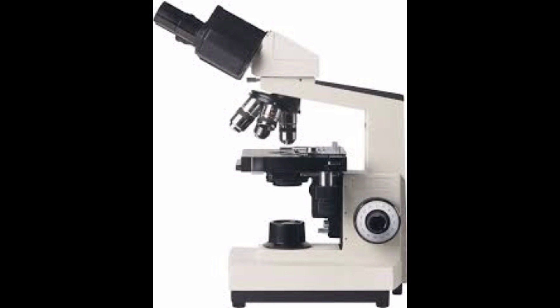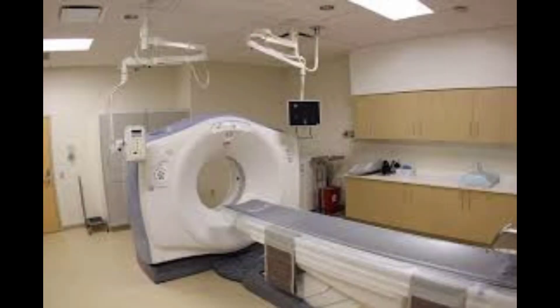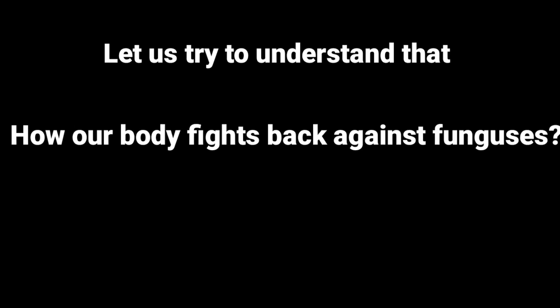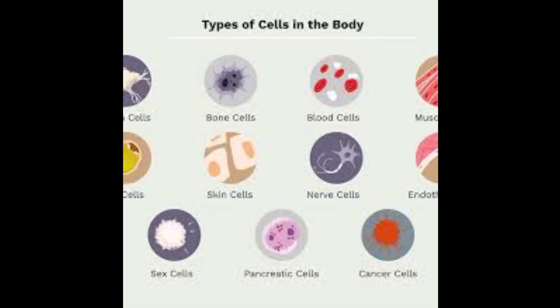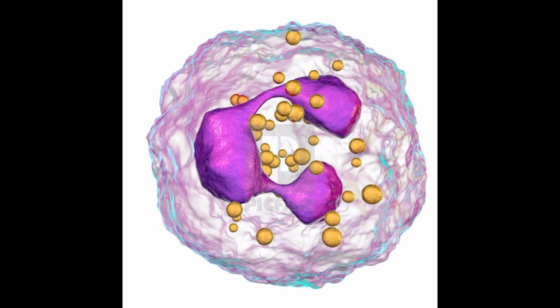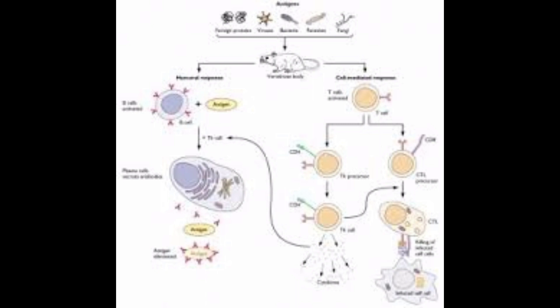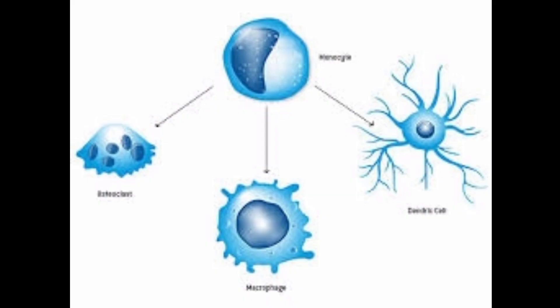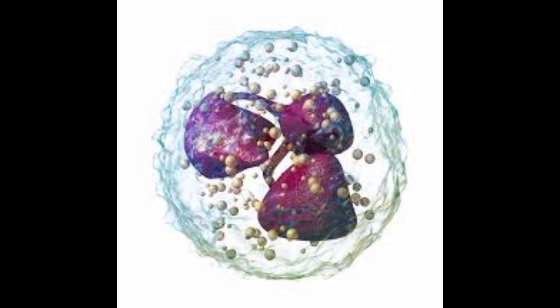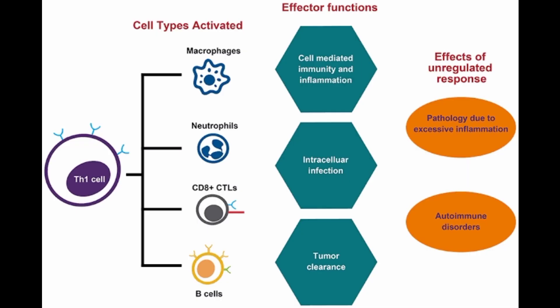Let's understand how our body fights back against fungi. There are several cell types that play a crucial role. Both the innate immune system and the adaptive immune system have the capability of fighting fungi. Innate immune cells such as macrophages, dendritic cells, and neutrophils can fight fungi. In the adaptive immune system, specifically T cells — TH1 type cells and TH17 type cells — can fight back against fungi.